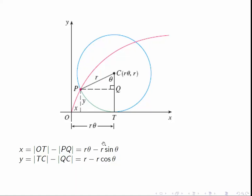CT, of course, is just the radius of the circle. So that's R. And CQ is the adjacent side of this right-angle triangle. So it has length R cosine theta. So the Y coordinate is R minus R cosine theta.